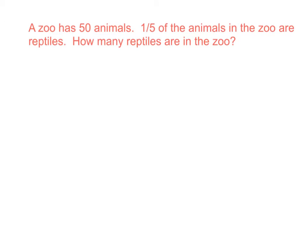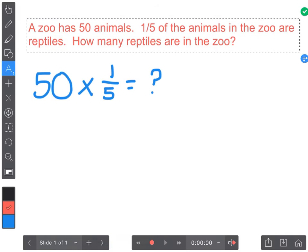The problem says the zoo has 50 animals and one-fifth of the animals in the zoo are reptiles. So how many of those animals are reptiles in that zoo? Go ahead and pause the video right now and solve that problem. Hopefully you paused the video and you've solved the problem, but let's go ahead and solve it together. So the first thing I'm going to do is set up my problem: 50 times one-fifth.